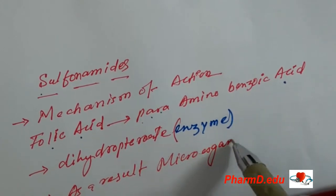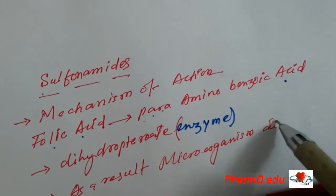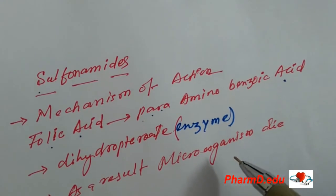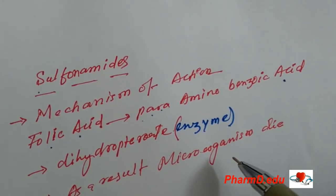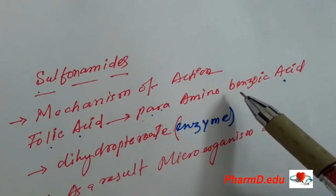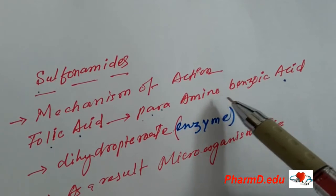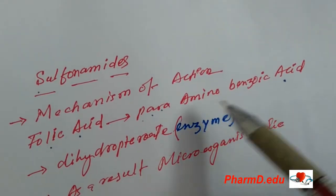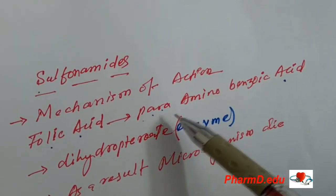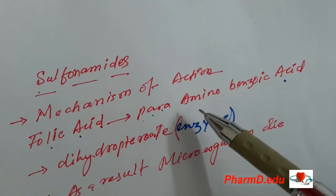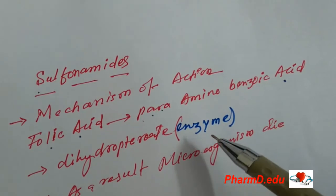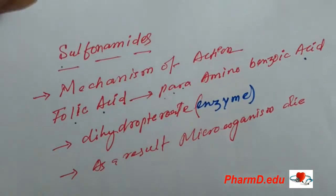As a result, destruction takes place — the microorganism dies, because microorganisms need folic acid for the growth and development of DNA and RNA. In the folic acid pathway, para-aminobenzoic acid is required for folic acid synthesis. When sulfonamide comes in place of para-aminobenzoic acid, the enzyme cannot convert it, and as a result the bacteria die.